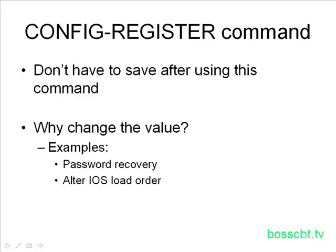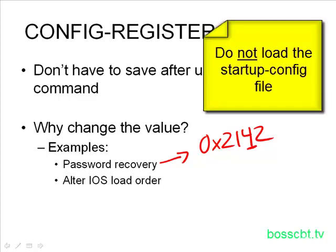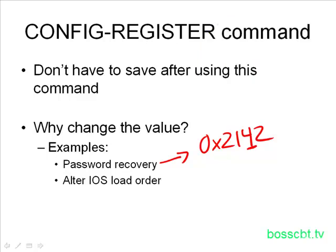For example, for a password recovery, if we change the configuration register value to 0x2142 — remember the default value is 0x2102 — by changing this particular value, the router will ignore any of the configuration files in NVRAM. So it loads up like a brand new router with no configuration file. That way you can access the router, get into privileged mode, copy the configuration file into running memory, and then change the passwords — it's a way to get back in if you've ever lost your password.